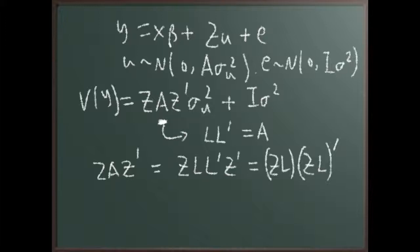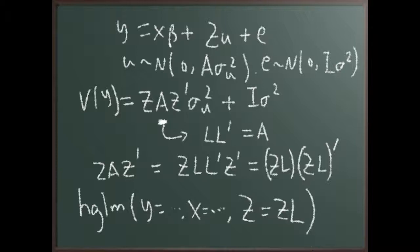And then, if we think about this ZL as a dual design matrix for the random effects, then we have independent random effects left. So in HGLM, we can input arbitrary user-defined design matrix, so that makes this possible. So if you call R HGLM, what you do is you give Y equal something, X equal to your design matrix for fixed effects, and Z is ZL in this case. You create this matrix beforehand.